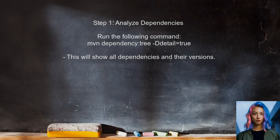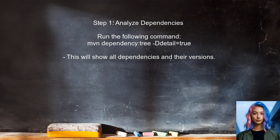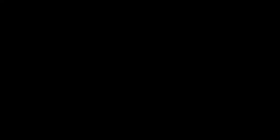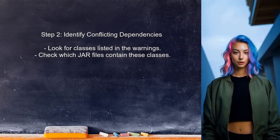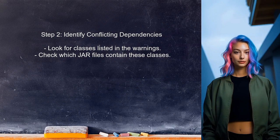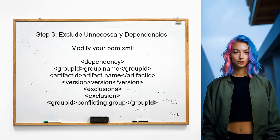To avoid the overlapping classes warning in a Maven build, you should first analyze the dependencies in your project. This can be done by running a specific command in the terminal. Next, identify which dependencies are causing the overlap. You can look for the specific classes mentioned in the warning messages to determine which JAR files are conflicting.